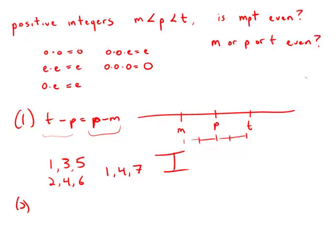Statement number two tells us that t minus m is 16. Okay, so the distance on the number line from the largest to the smallest, that distance is 16.